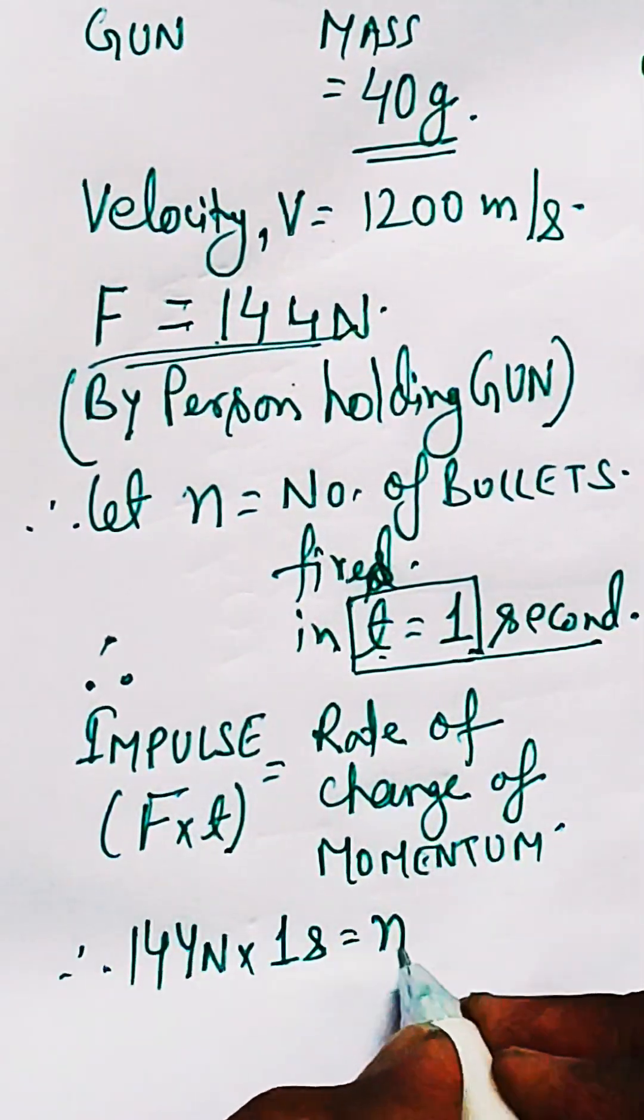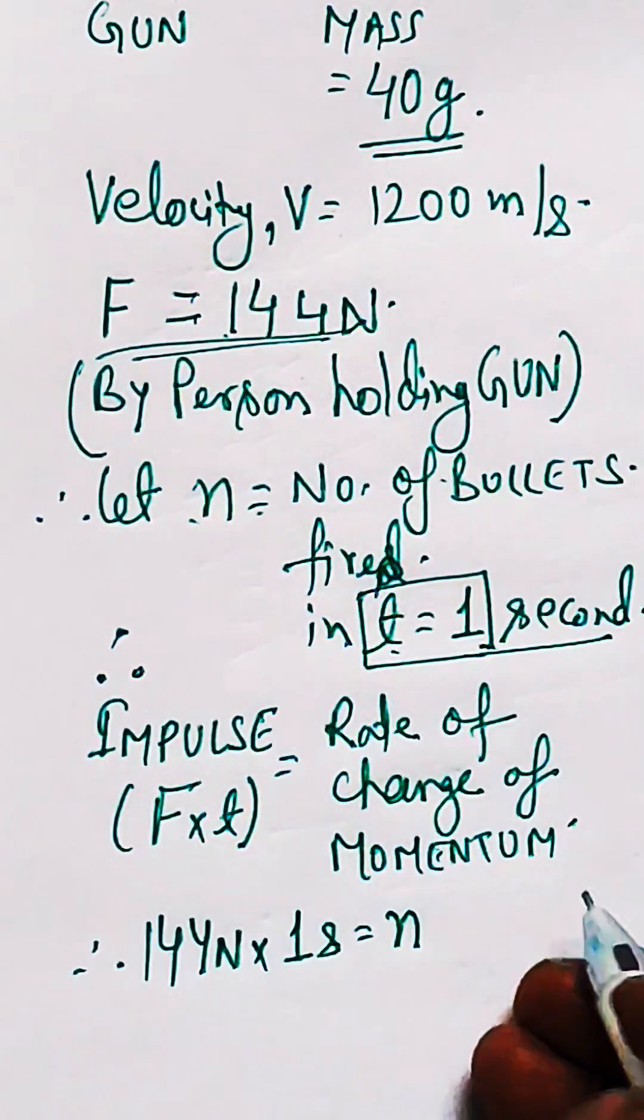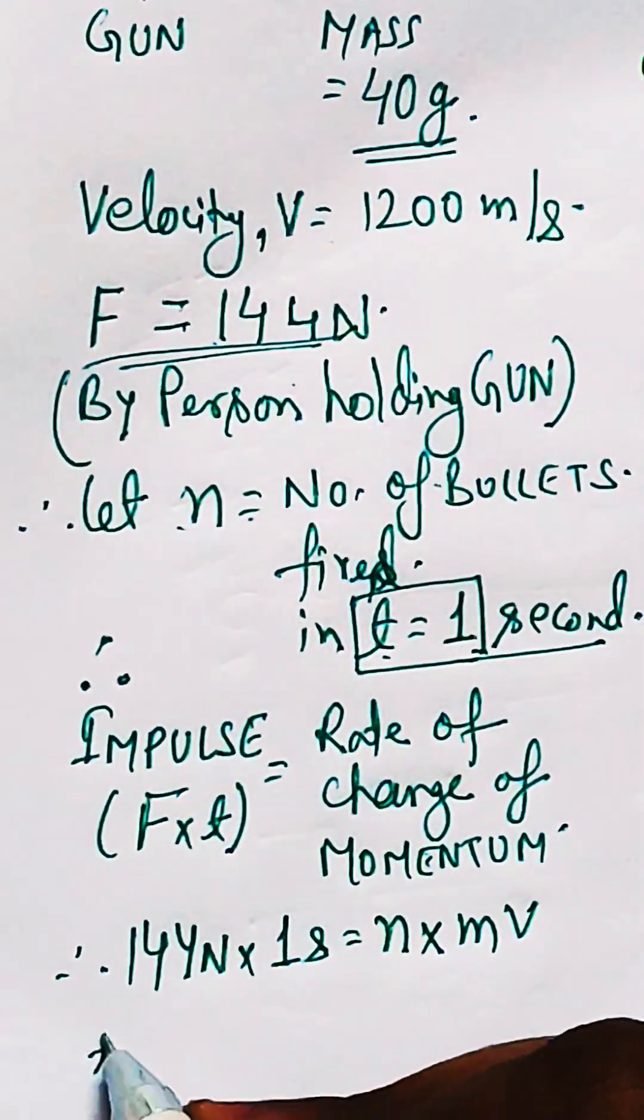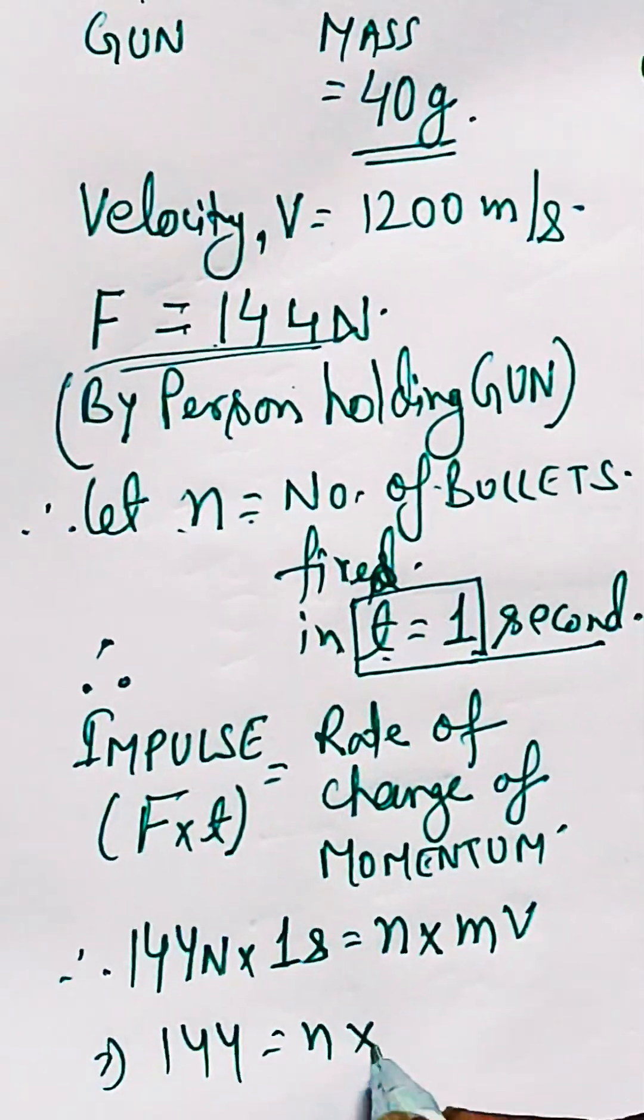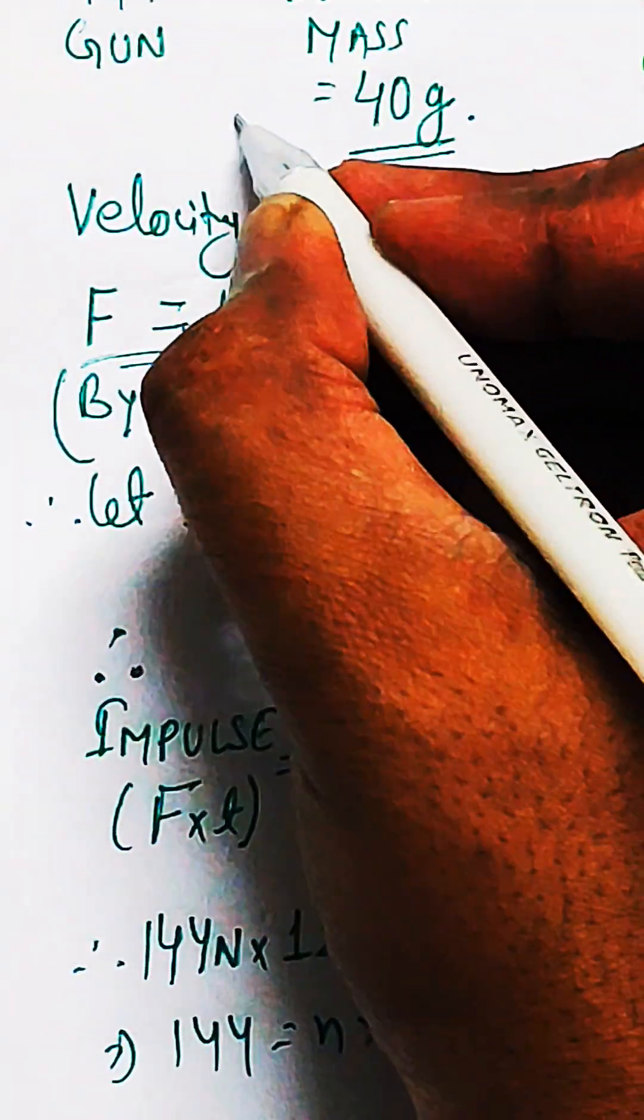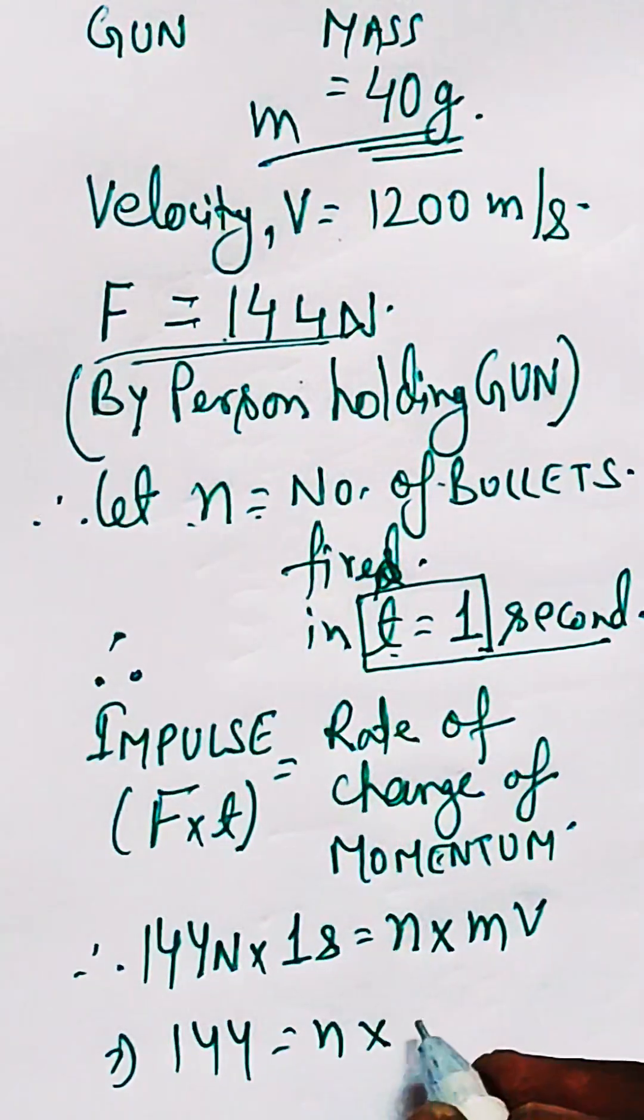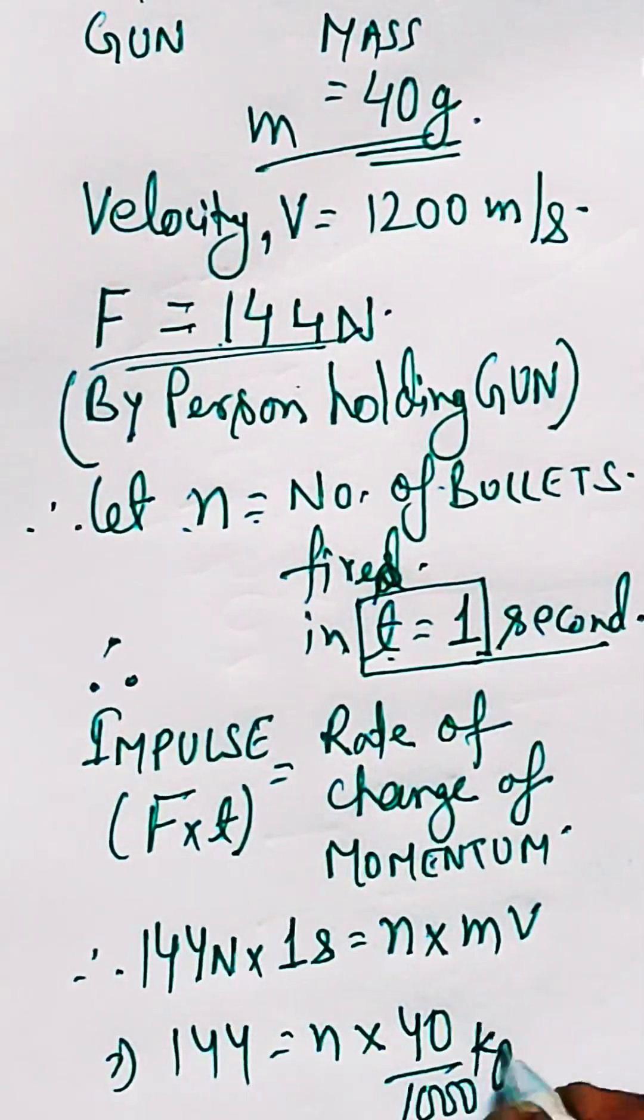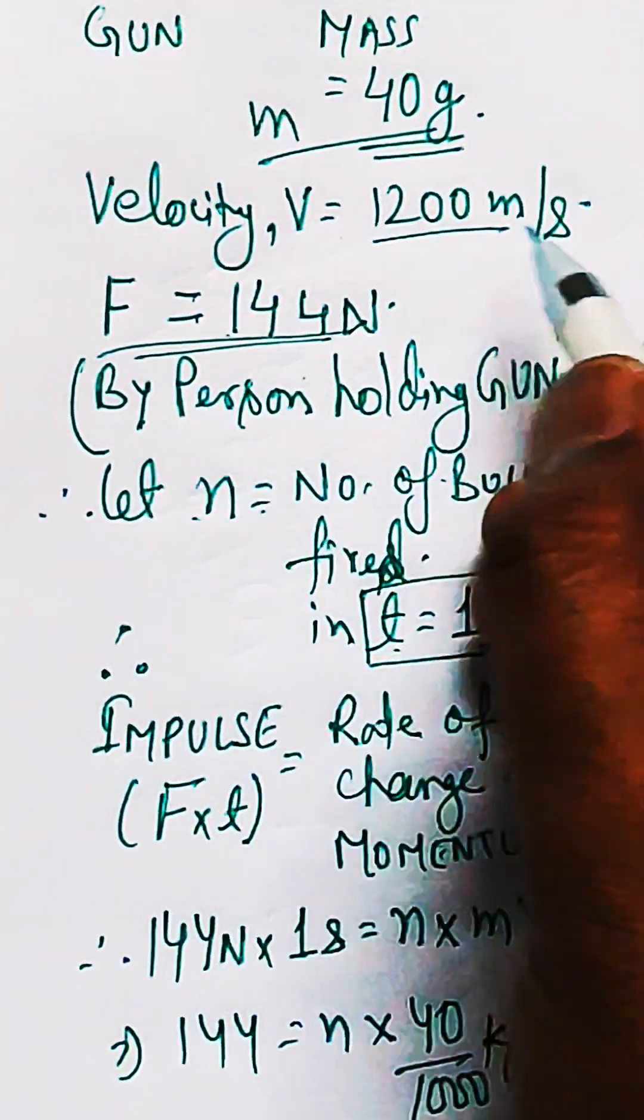This equals n number of bullets times m—m is 40 grams—times V is 1200. Just convert mass of 40 grams into kilograms. 40 by 1000, then only it will be converted into kilograms, times velocity is 1200 meters per second.